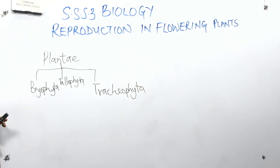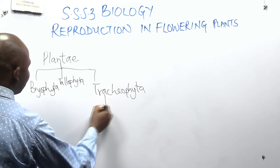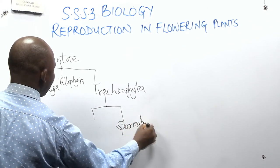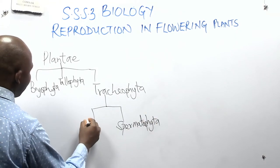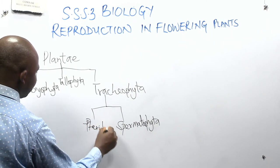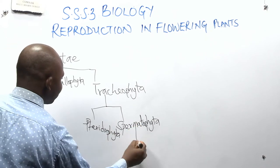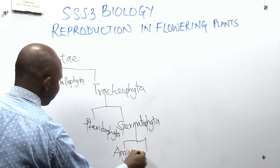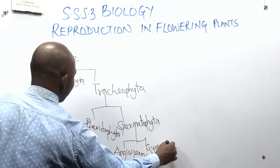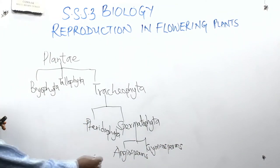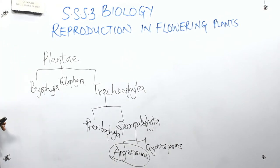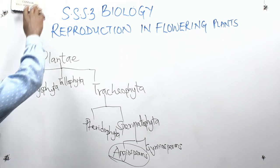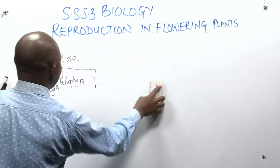The Tracheophyta is divided into two: Spermatophyta and Pteridophyta. Now it is this Spermatophyta that is then divided into another two divisions — angiosperms and gymnosperms. So when we talk about flowering plants, we are actually referring to angiosperms. By definition, a flower is a reproductive or specialized part in an angiosperm that helps them to reproduce.